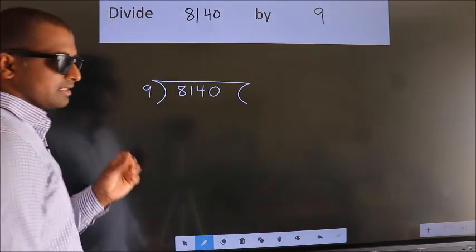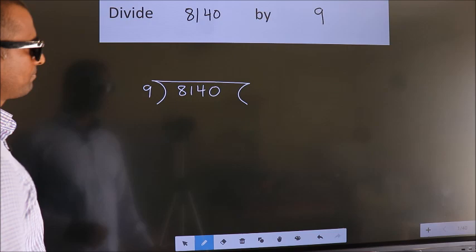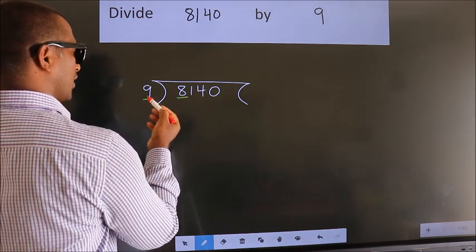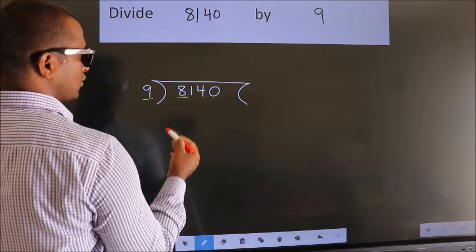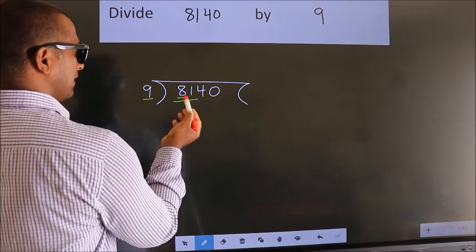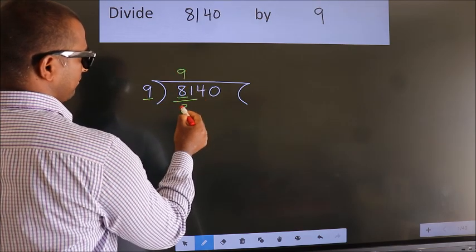This is your step 1. Next, here we have 8, here 9. 8 smaller than 9, so we should take 2 numbers, 81. When do we get 81? In 9 table, 9 nines, 81.